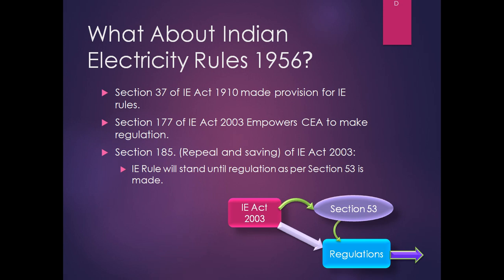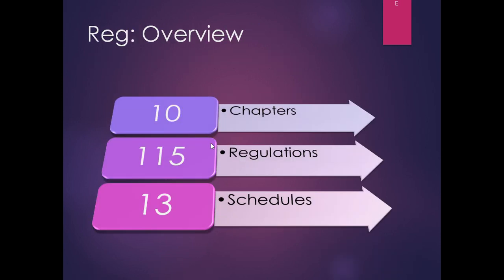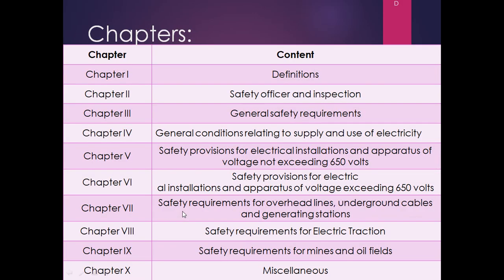So now we have to follow the regulation only. The regulation overview: it has 10 chapters, around 100 sub-regulations, and 13 schedules. Chapter 1 is for definitions. Chapter 2 is safety officer and inspection. Chapter 3 is general safety requirements. Chapter 4 is general conditions relating to supply and use of electricity. Chapter 5 is safety provisions for electrical installation and apparatus of voltages not exceeding 650 volts. Chapter 6 covers voltages exceeding 650 volts. Chapter 7 is safety requirements for overhead lines, underground cables, and jetting stations. Chapter 8 is safety requirements for electric traction. Chapter 9 is safety requirements for mines and oil fields. Chapter 10 is miscellaneous. In this presentation, electric traction and mines and oil fields related regulations have been skipped.